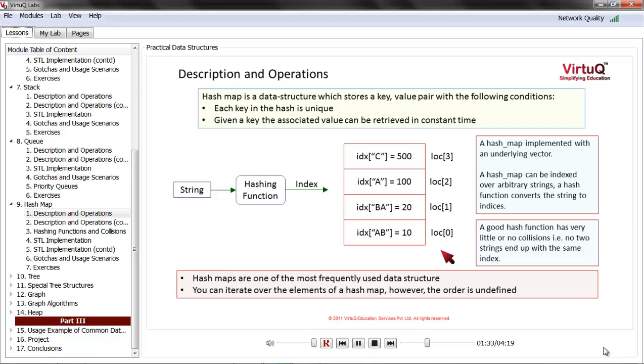As we can see, location 0, location 1, 2, 3, and idx in square brackets with double quotes "ab" shows that if we try to retrieve the value of ab from the hash map, we will get a value of 10, and ab is actually residing at location 0. Then ba with a value of 20 is residing at location 1, idx with a value of 100 at location 2, and c with a value of 500 at location 3. The hashing function uses the particular key (ab, ba, a, or c) and converts it into the location in this array or vector. Hash maps can be indexed over arbitrary strings, and the hash function converts the string to indices.